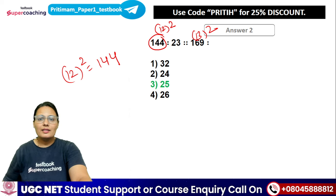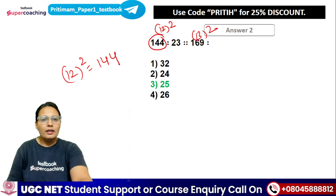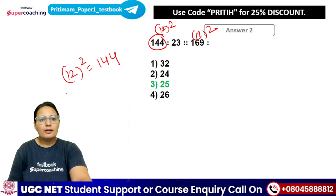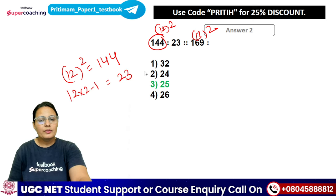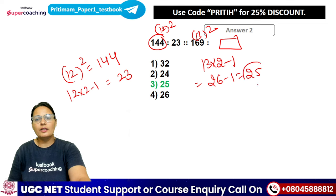In the same way, अगर हम 12 multiplied by 2 minus 1 करें तो 23 आता है। Similarly, 13 multiplied by 2 minus 1 करेंगे तो 26 minus 1 = 25. That's why 25 is the correct answer.